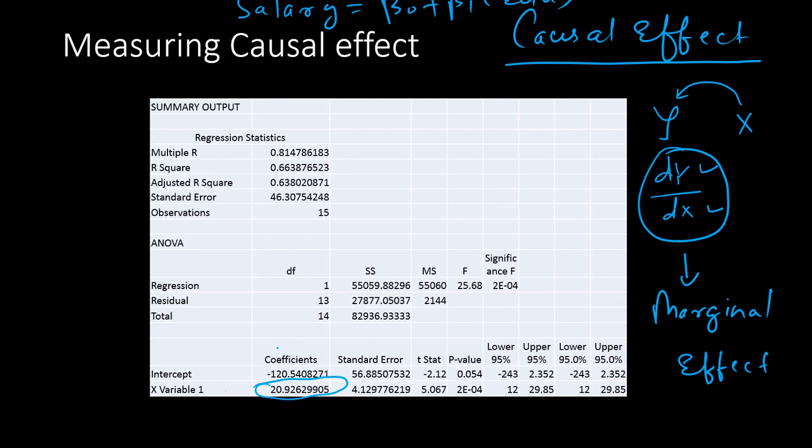So if your motivation is not just predicting your value, you also want to see the relationship between the explanatory or independent variable with the target variable, both are important to you. If that is the case, you should go ahead with linear regression.